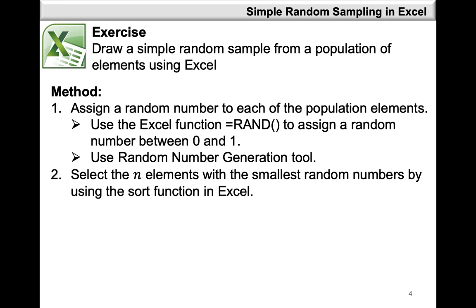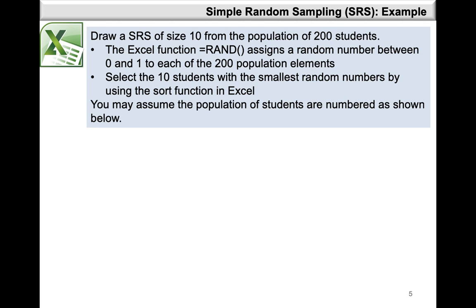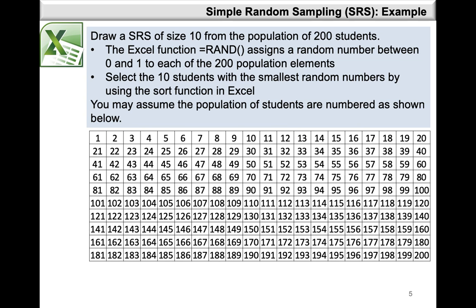After you've done this, select both columns of your population elements and your random numbers and sort them with respect to your random numbers so that your random numbers will be in ascending order. Then you can proceed and select the n elements that you want for your sample with the smallest random numbers. In this example, we're interested in drawing a simple random sample of size 10 from a population of 200 students, and we're going to make use of the RAND function in Excel to assign a random number to each student and then select the 10 students with the smallest random numbers. Assume that students are numbered from 1 to 200.